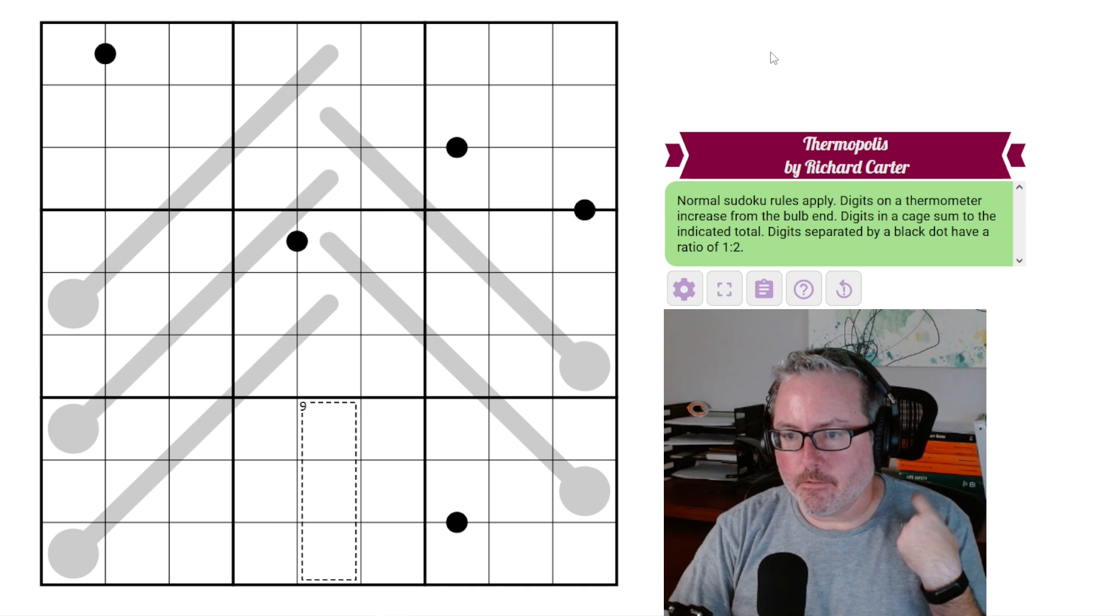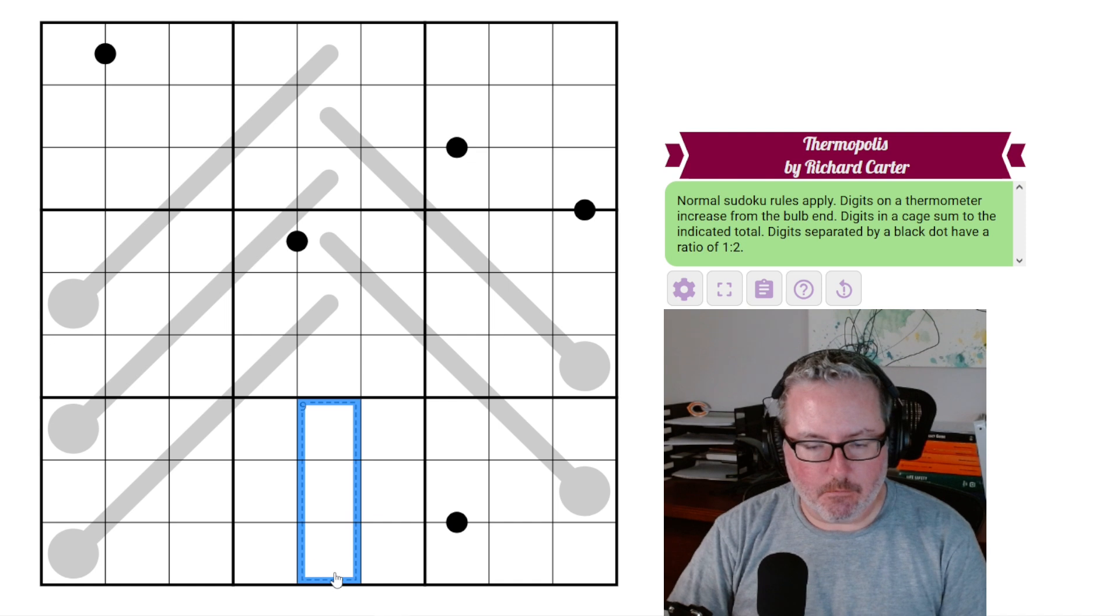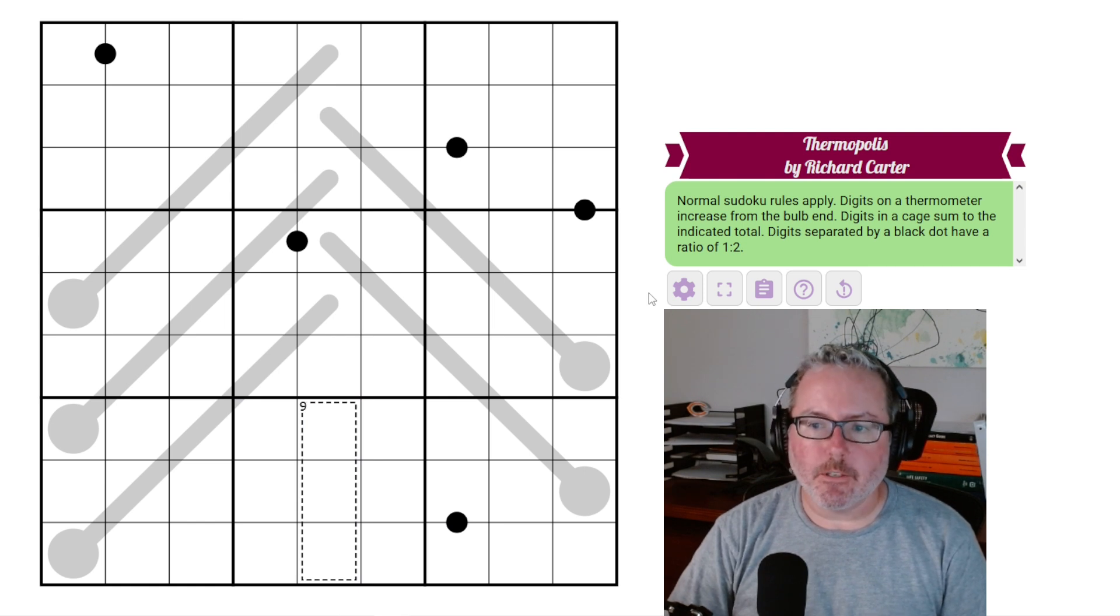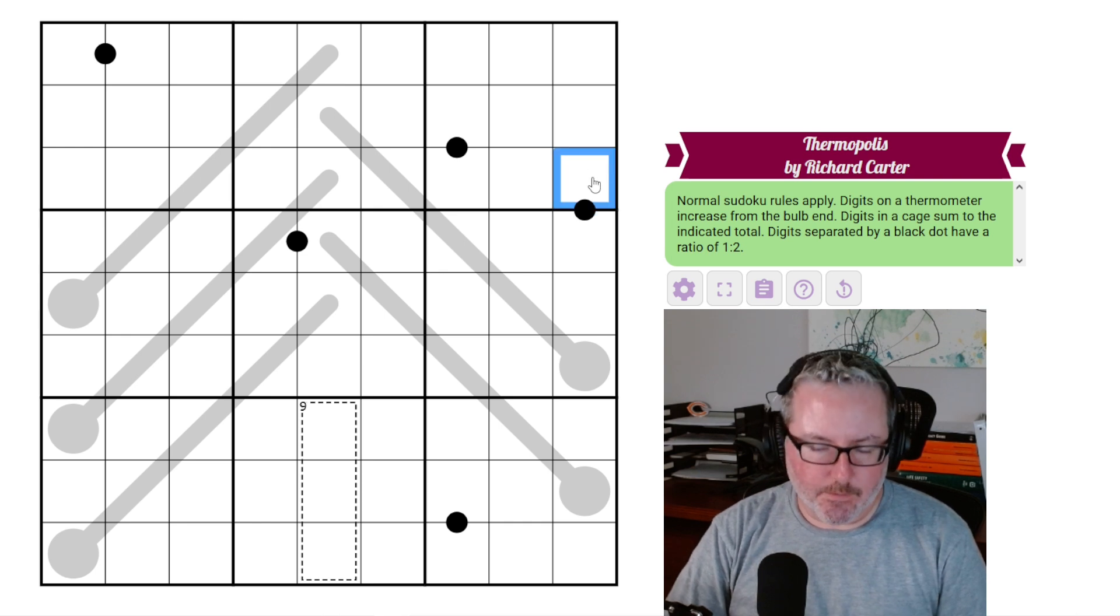There's no requirement for anything to be similar. And we have digits in a cage summed to the indicated total, so these three digits here. Whatever they are must add up to that given digit, and then digits separated by a black dot have a ratio of 1 to 2. So these two guys, whatever this is, this is double or half. If this is x, this is 2x or x over 2.